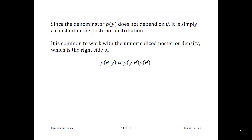One thing to note is that the marginal distribution of y in the denominator is actually a constant, because it is the distribution of the data evaluated at the observed values of y. Since it's a constant, we can usually ignore it when deriving our posterior distribution, since we know the posterior must integrate to 1. Thus, it's common to simply say that the posterior distribution is proportional to the data distribution multiplied by the prior distribution, ignoring the scaling constant related to the marginal distribution of y.